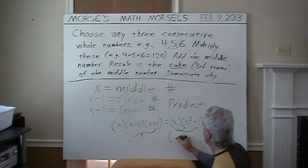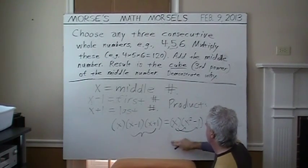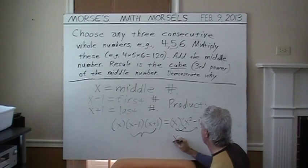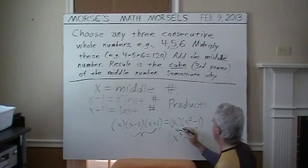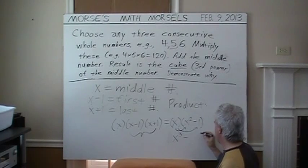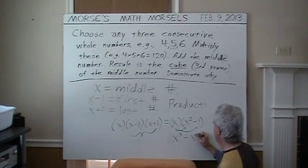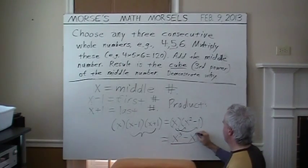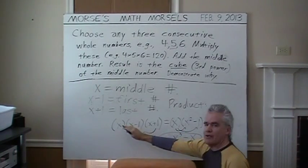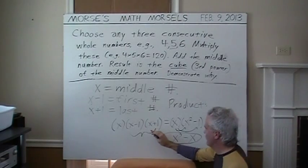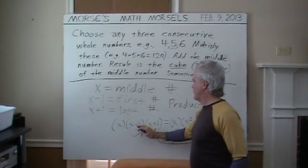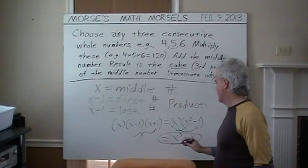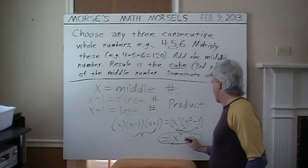Finally multiply each of these by the X. Distributing. I won't need the parenthesis any longer. X times X squared. Law of exponents gives X cubed. X times that minus 1 just be minus X. So there's our product. The product of these three consecutive whole numbers. The middle number. The first number. The last number. Just arranged a little differently in the equation.